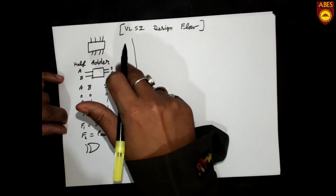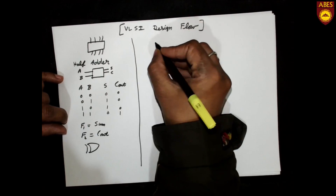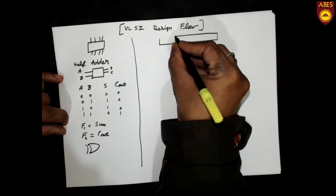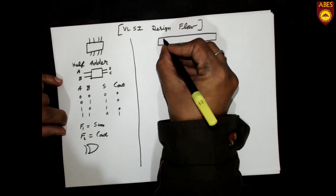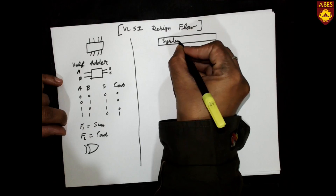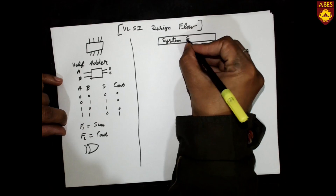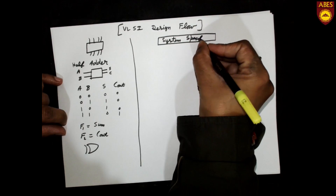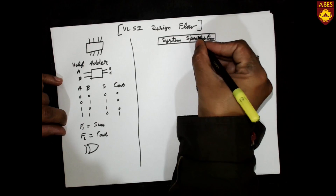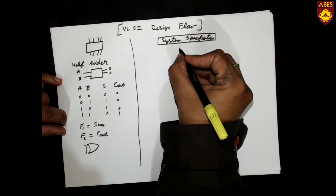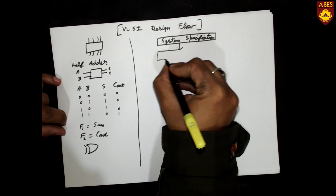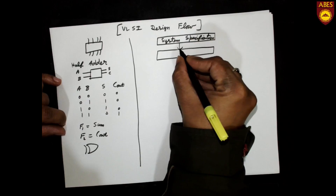That means the first step in designing any system in the VLSI domain is to find out the specification of the system. After describing the specification, the architecture for that system is then created.